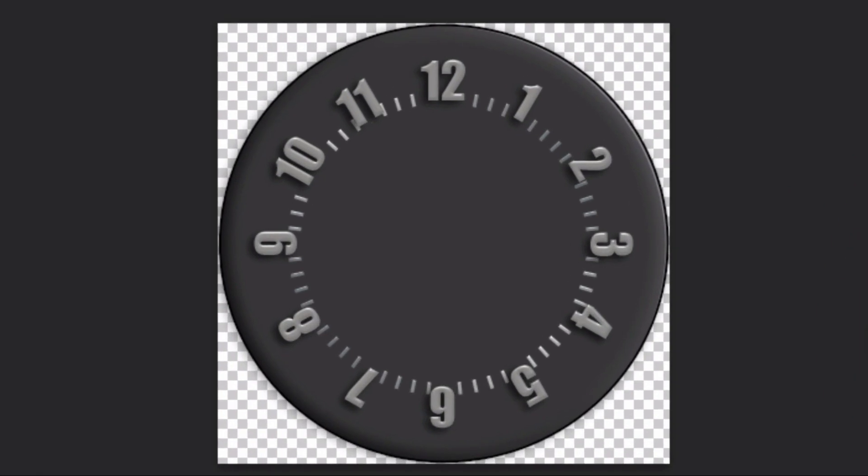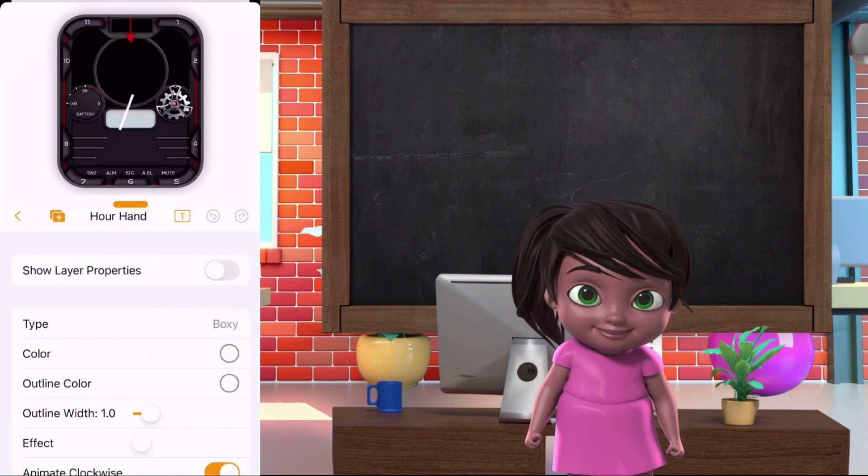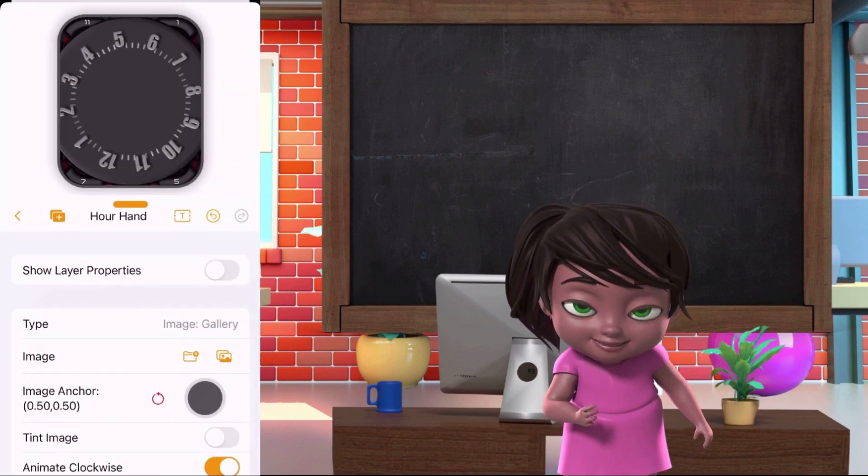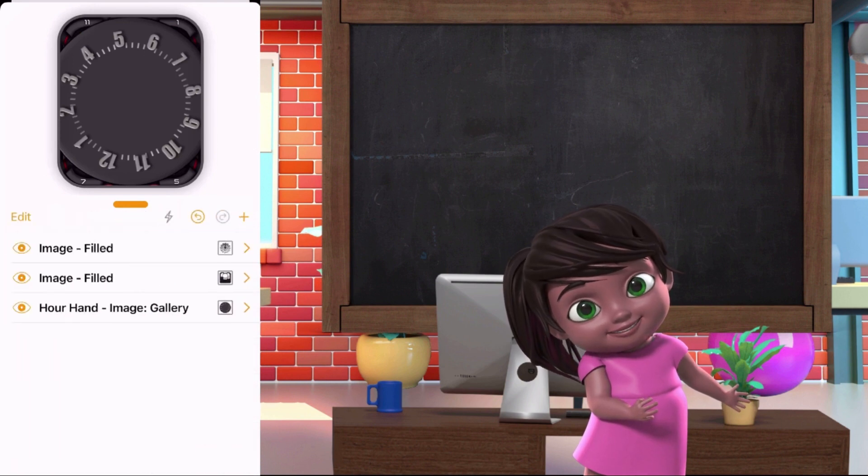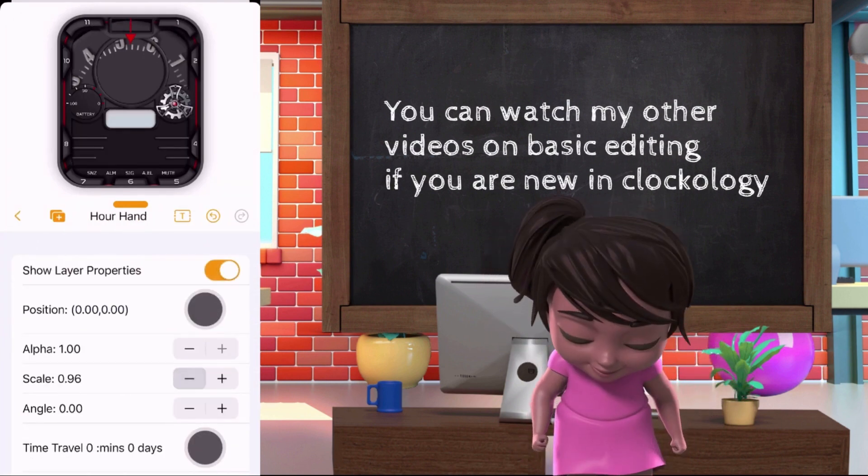I made this dial for moving hour. I will make a different video on how I made this. For now, let's set this up in Clockology. Create an hour layer. Choose image. Then I will upload the image I made for hour. Let's move the layer and make it under our base image. Set the size and location of the layer.